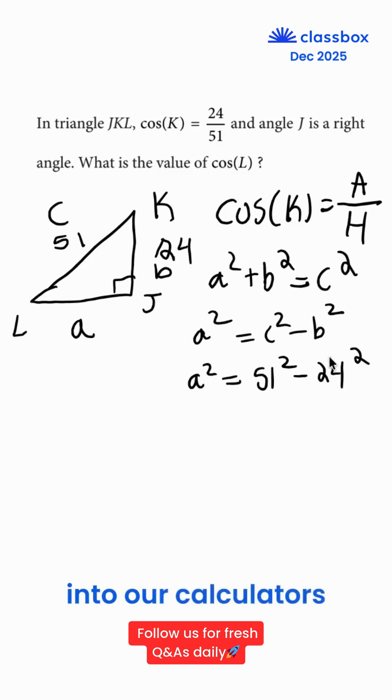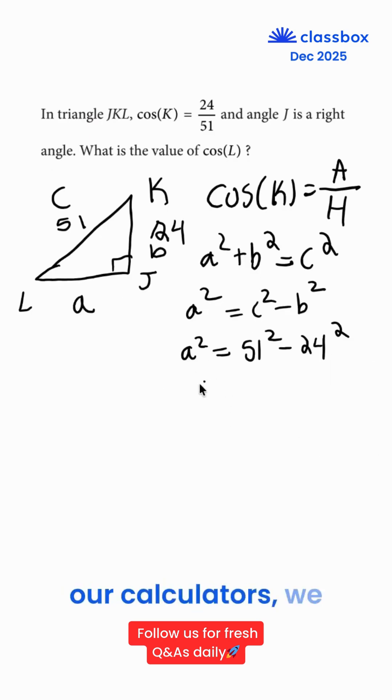Let's put this into our calculators to get the answer. Once we put this in our calculators, we get that A squared is equal to 2025.